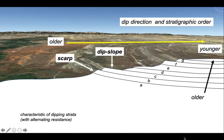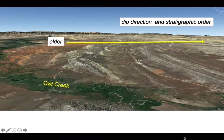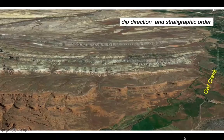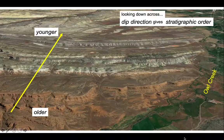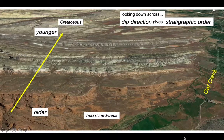The stronger layers form the escarpments or scarp slopes. That's a very classical view of looking at stratigraphic relationships on maps. Looking down the dip direction now, the creek is over on our right and the rocks are dipping away from us. We're going from older to younger as we look down across the dip direction — from these red beds at the bottom, which are Triassic in age, to younger Cretaceous strata at the top of the picture, down the dip direction.